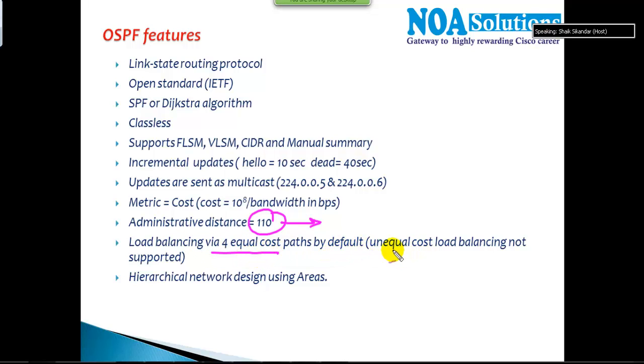In one route we got a cost of 1000, the second route is having the cost of 1000, and the third route is having the cost of 2000. Now 1000 is the best route, but as of now I got two routes which are having the same cost.